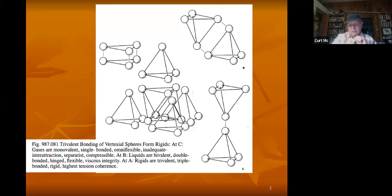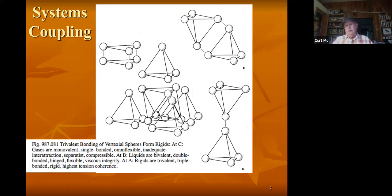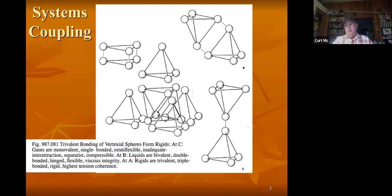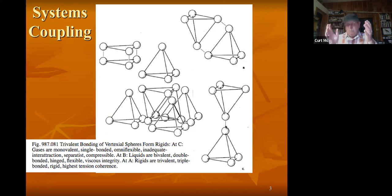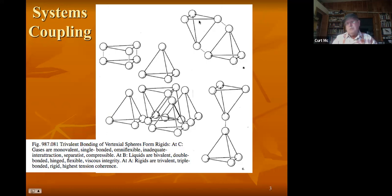These are different things Bucky did, and we're talking about just the TrimTab one tonight. This illustration from Synergetics shows systems coupling. Systems can couple at one point or node — two tetrahedrons joined by a single relation, like molecules of gas, very loosely coupled. Two interconnections act more like a hinge, more like a liquid. Three points of contact essentially makes the two systems become one, at least in terms of the overall system.